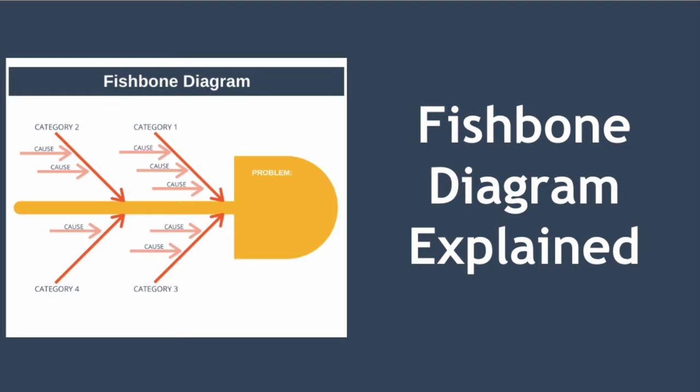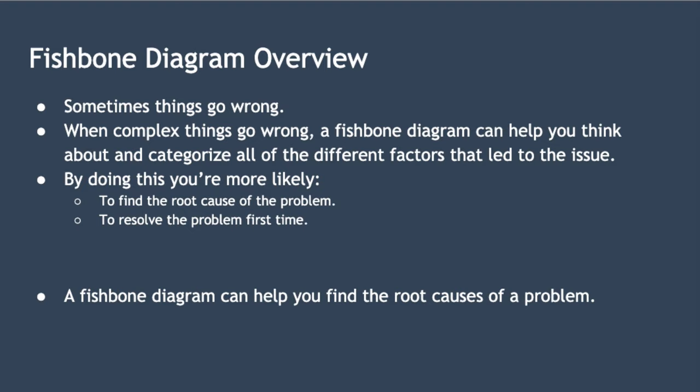Hello and welcome to today's lesson where we're looking at explaining the fishbone diagram, also known as the Ishikawa diagram. No matter what line of work you're in, sometimes things go wrong. Some things that go wrong will be obvious and easy to resolve, while others will be more complex. When these complex problems occur, a fishbone diagram can help you to think about and categorise all of the different factors that may have led to the issue. By using a fishbone diagram, you're more likely to find the root cause or causes of the problem, rather than simply jumping into an immediate solution, which may later turn out to be incorrect. In this way, you become much more likely to permanently resolve the problem first time. So in a nutshell, using a fishbone diagram can help you find the root causes of a problem.